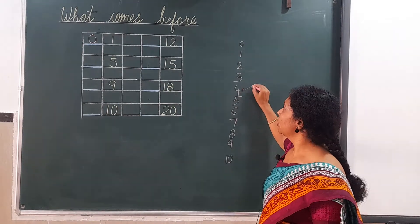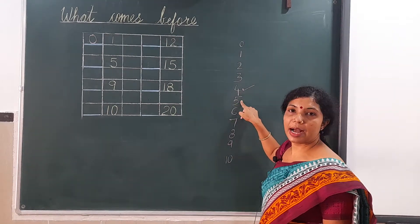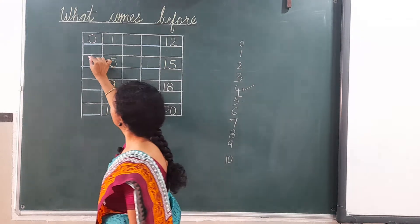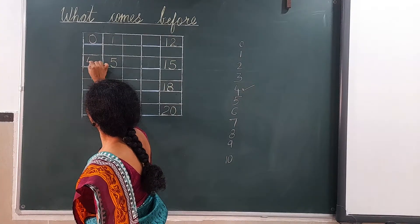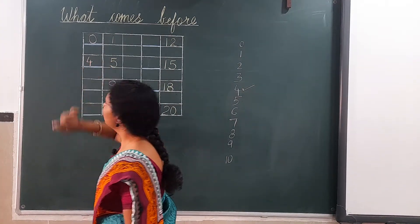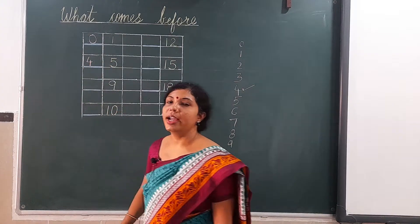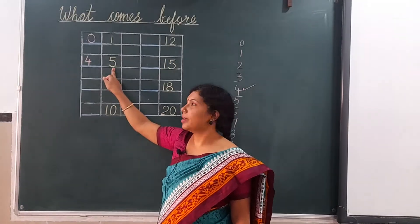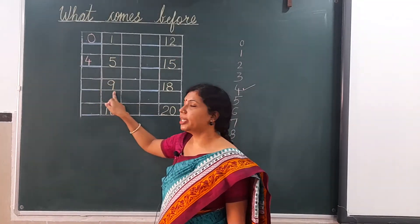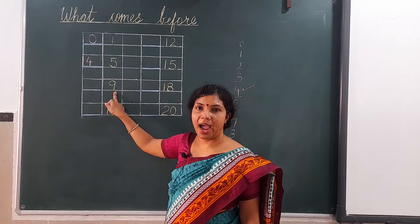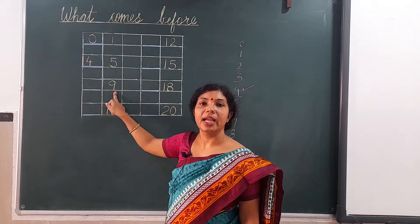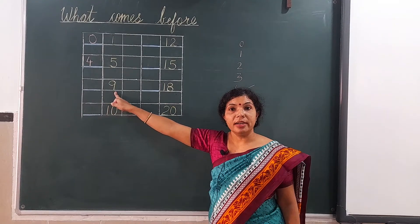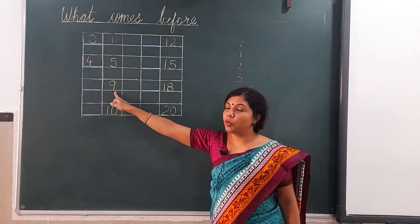We will write here 4. It means 4 comes before 5. Now it is 9. What number comes before 9?